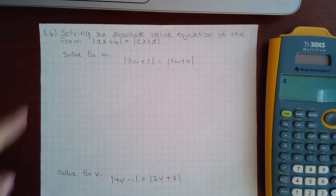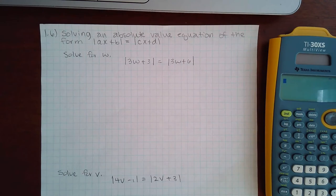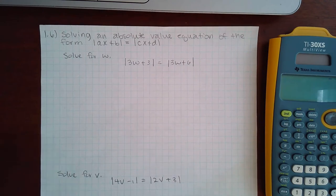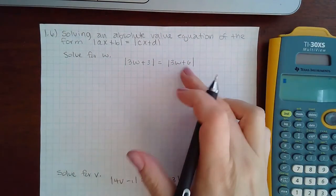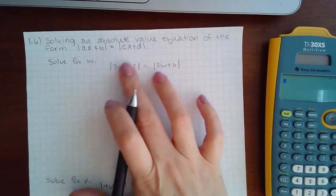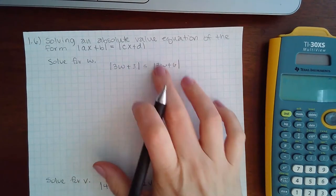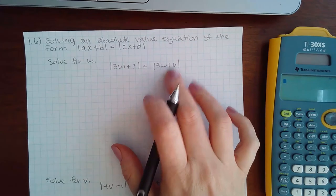Here we are solving 1.6, solving an absolute value equation of the form one absolute value of an expression equal to another absolute value of an expression. This is kind of like the case where you have a positive equal to a positive, because this absolute value bar is equal to a positive value. This will be positive because of the absolute value bars.